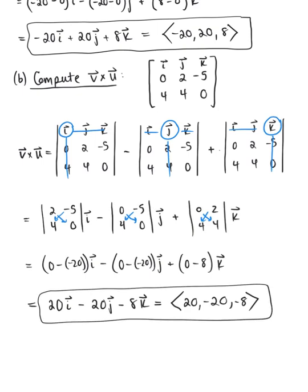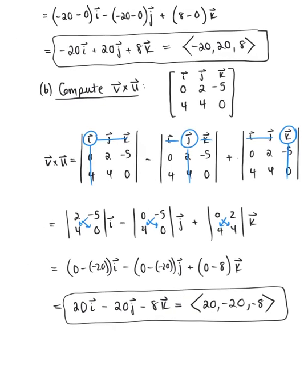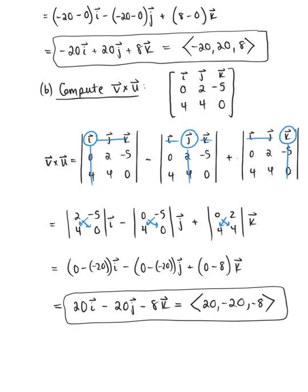Notice the similarities to our answer for u cross v. If we look up above, we found u cross v to be the vector negative 20, positive 20, 8. And we just found v cross u to be the vector 20, negative 20, negative 8. So the only thing that changes here are the signs.